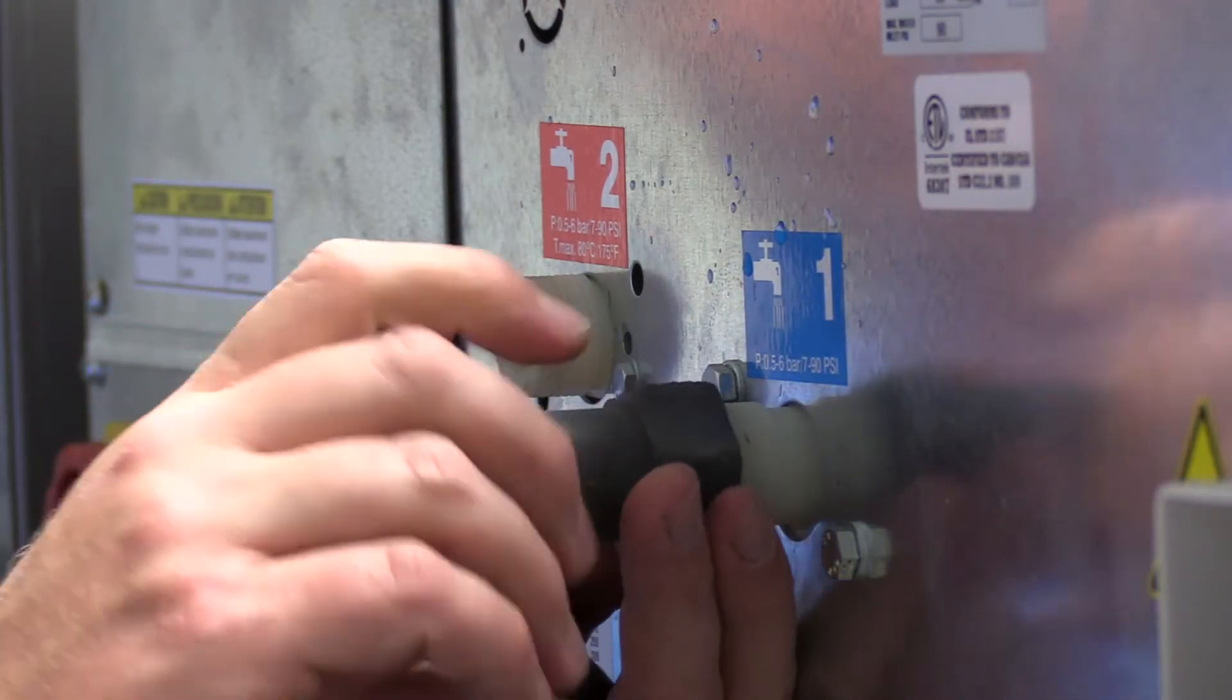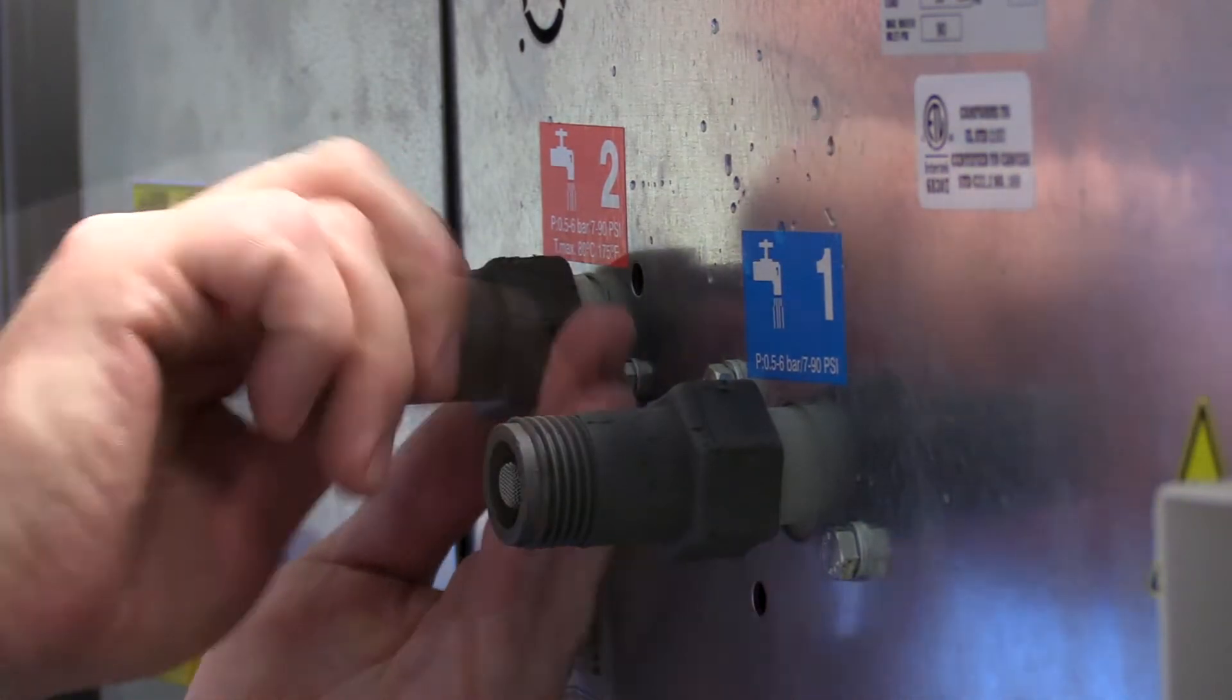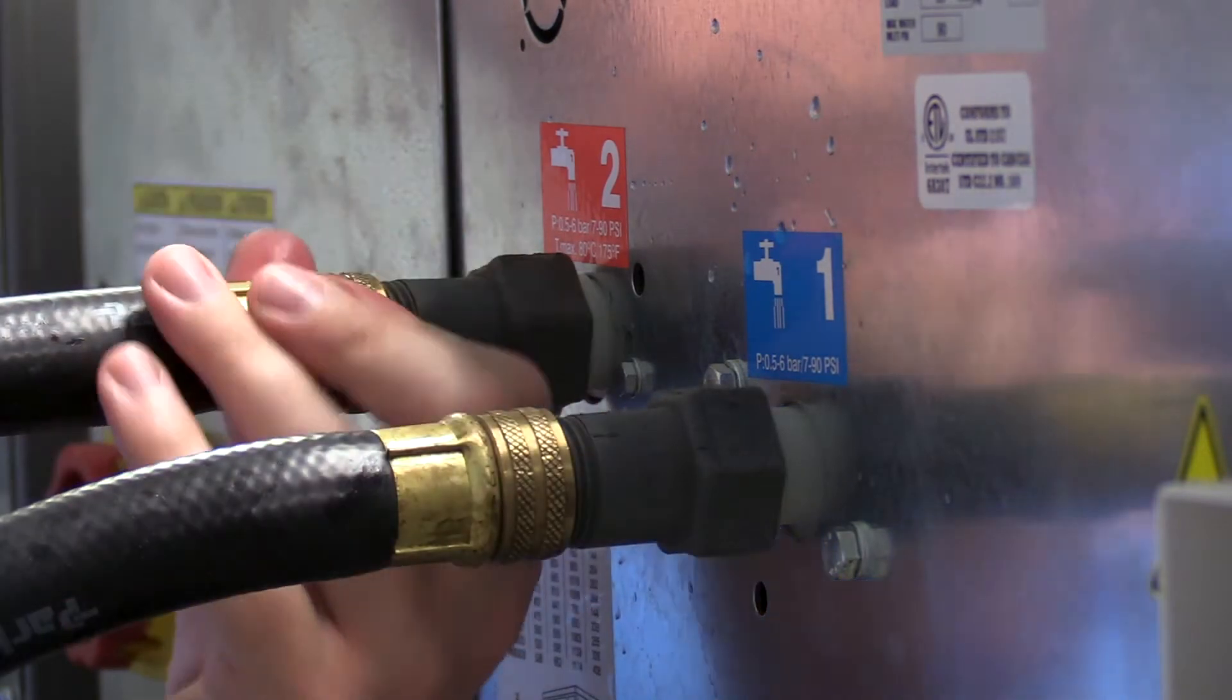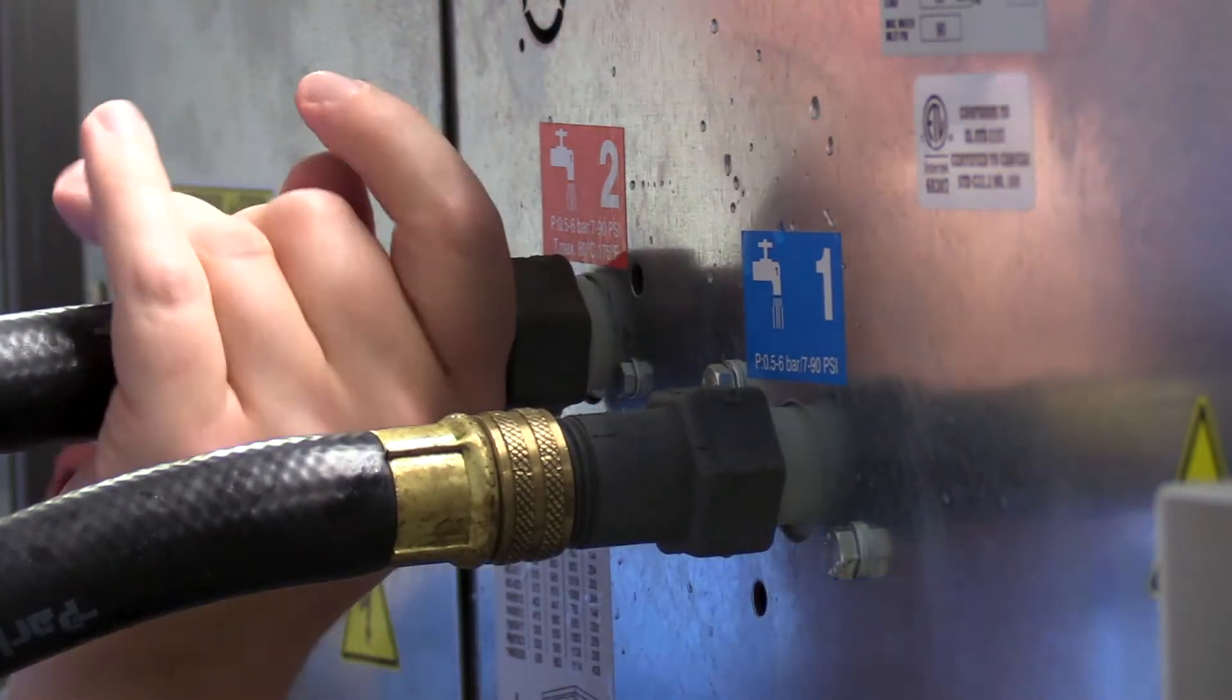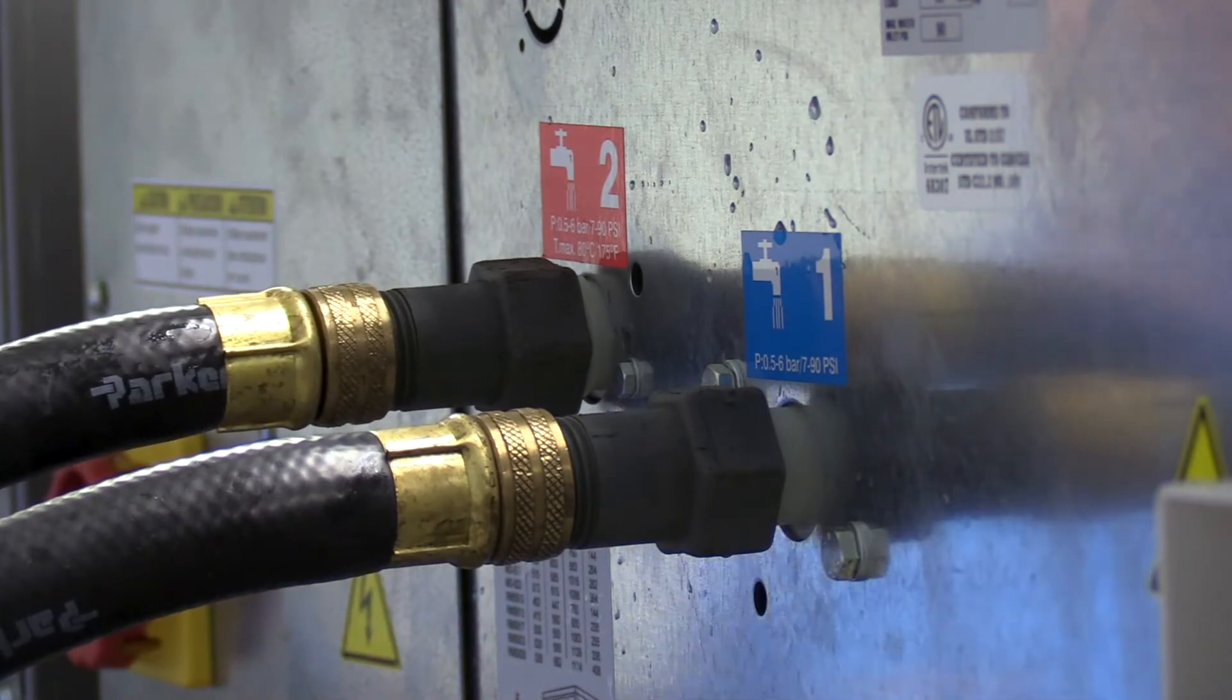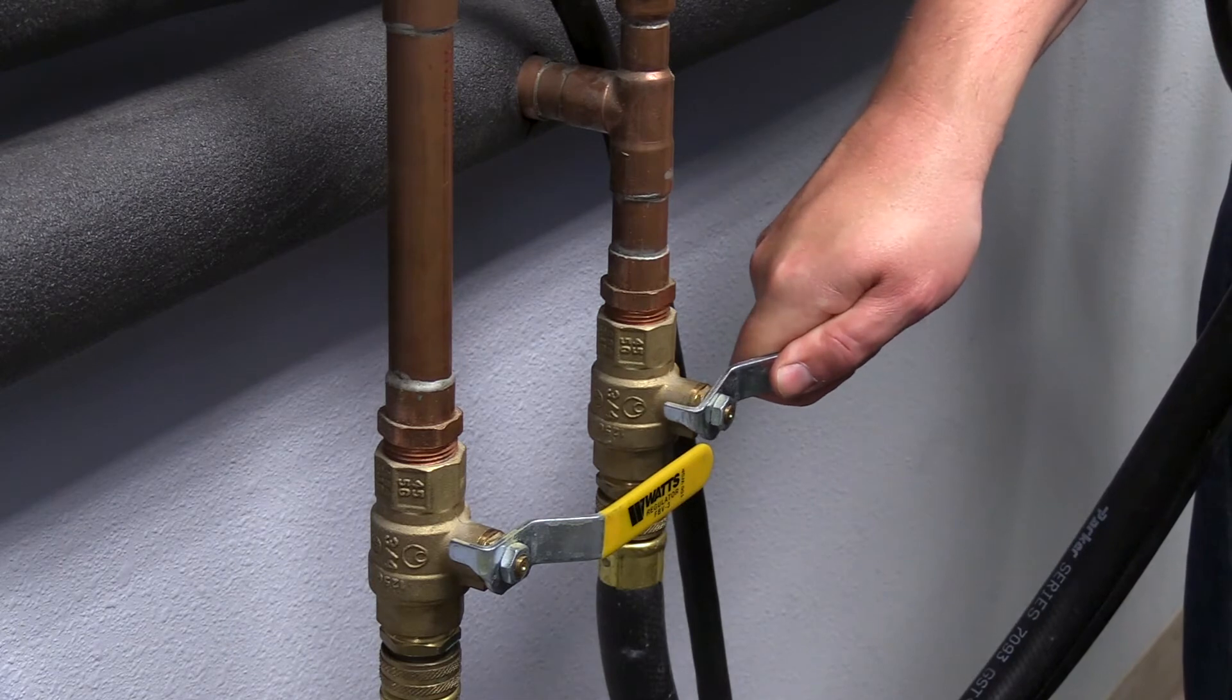Reconnect the water hose. Open the water valve and turn back on the power. Function test the valve and make sure there are no leaks.